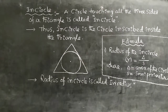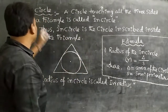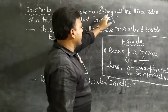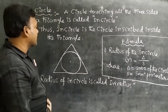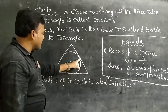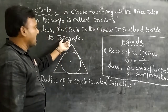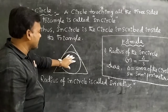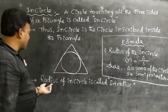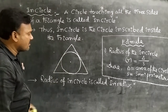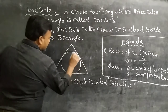As already explained, what is an incircle? A circle touching all three sides of a triangle is called an incircle. The circle is inscribed inside the triangle. The radius of the incircle is called the inradius, denoted by small r.